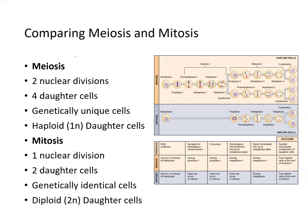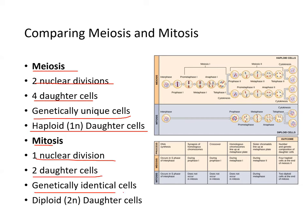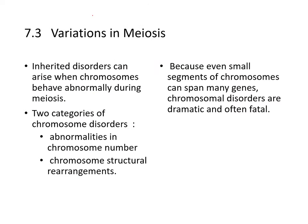Briefly comparing meiosis with mitosis: meiosis has two nuclear divisions, produces four daughter cells, genetically unique and haploid. Mitosis has one nuclear division, produces two daughter cells, genetically identical and diploid. A summary diagram in the slides covers this comparison effectively.